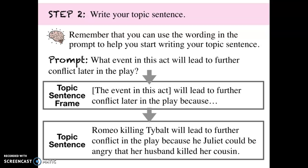Step two: write your topic sentence. Your topic sentence is your claim — what you're trying to say in response to the prompt. You can use the wording in the prompt to help you start writing the topic sentence; that's often a really good place to start. I took the prompt and turned it from a question into a frame: the event in this act will lead to further conflict in the play later in the play because... And then I filled that information in. So: Romeo killing Tybalt will lead to further conflict in the play because Juliet could be angry that her husband killed her cousin.